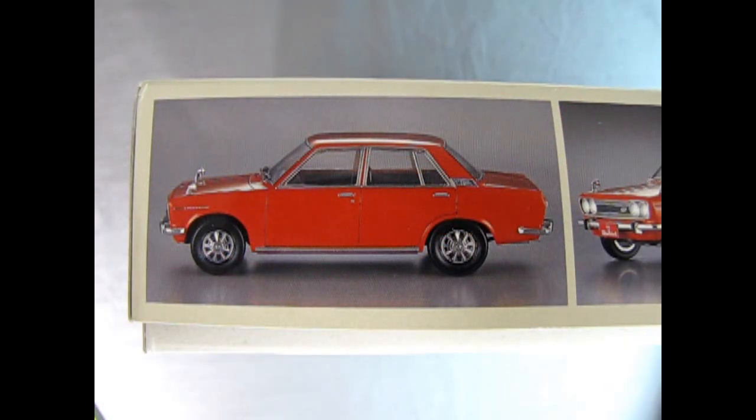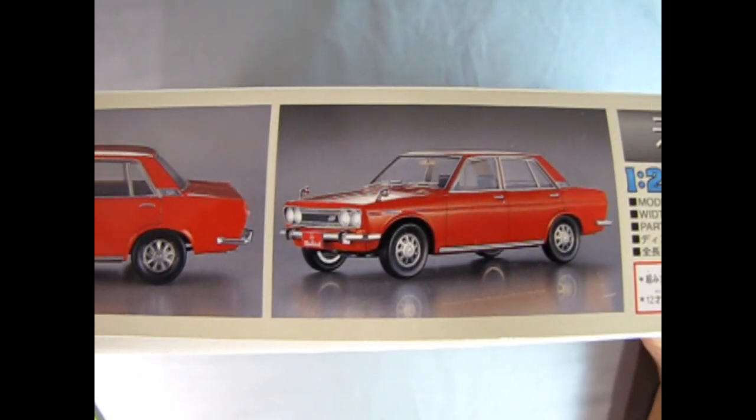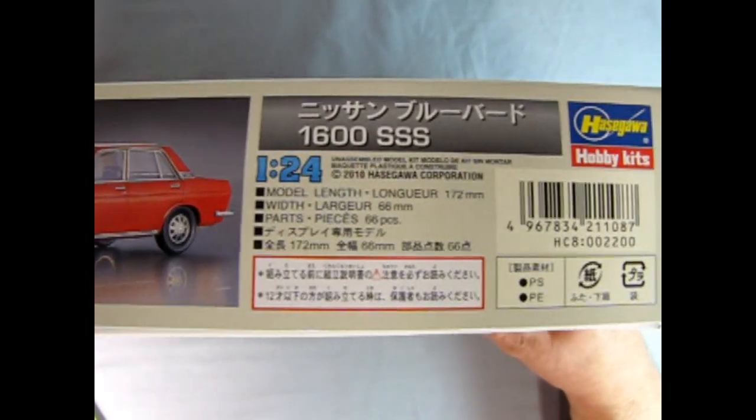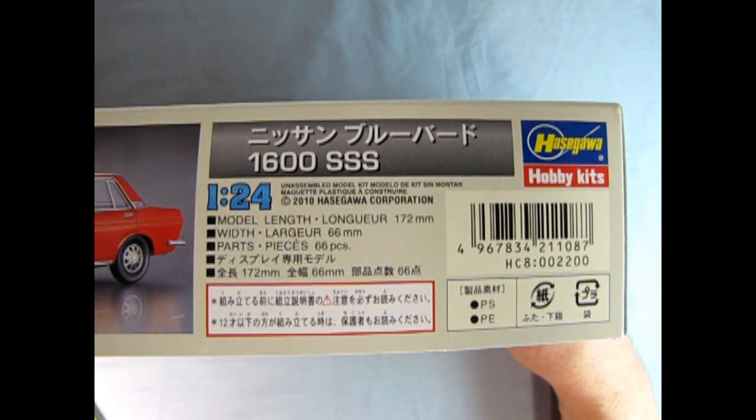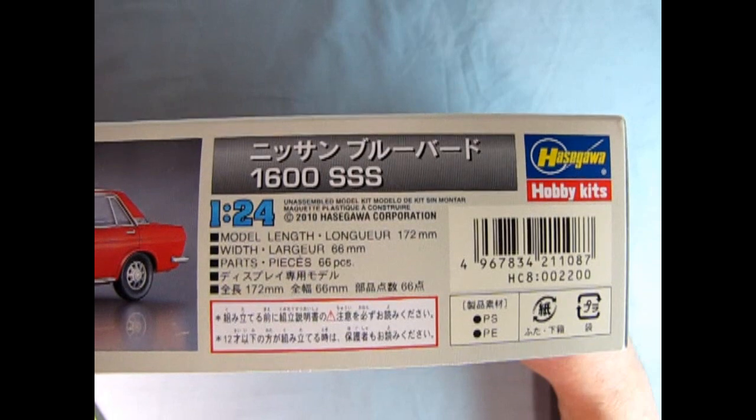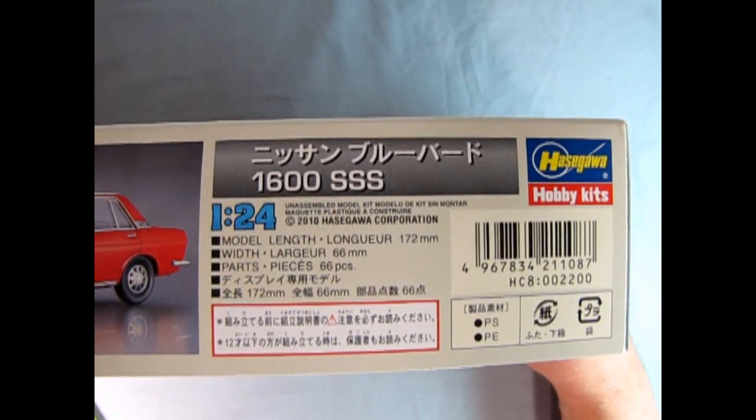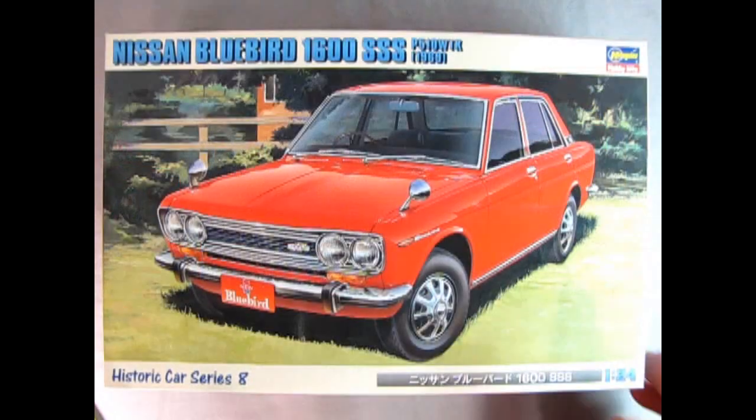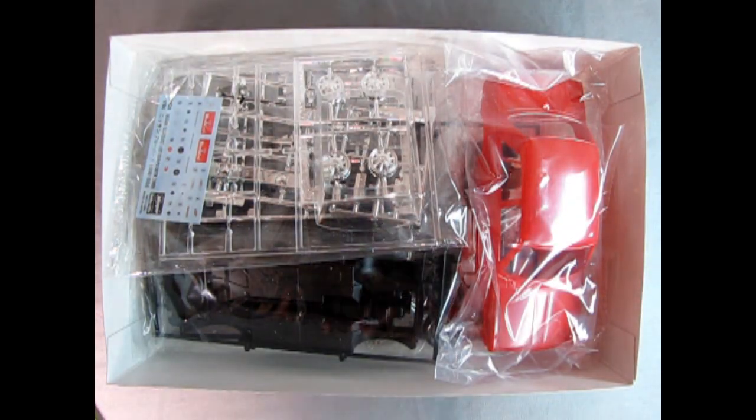Looking at this side of the box we can see the wonderful side view of our model car and here we have a three-quarter front view. We also have some details on the kit. This is a 1:24 scale model kit. The length is 172 millimeters and the width is 66 millimeters. It has 66 pieces and some stuff in Japanese that I can't understand.